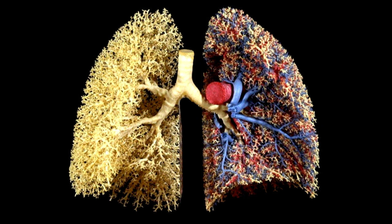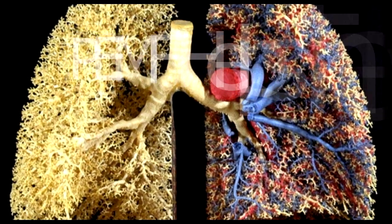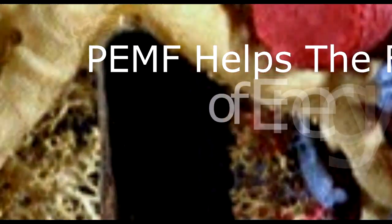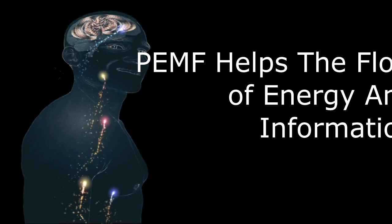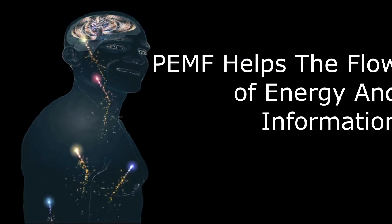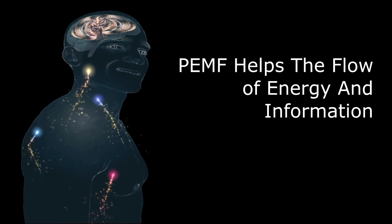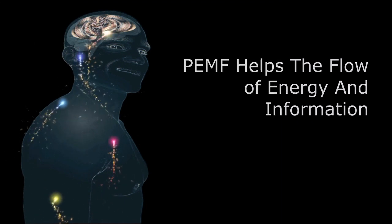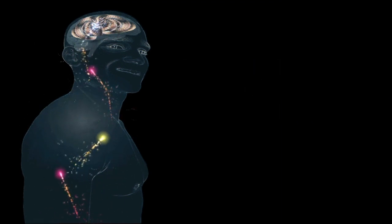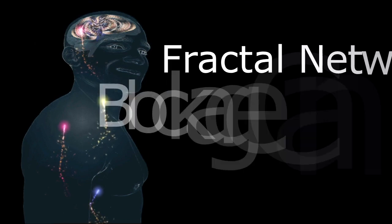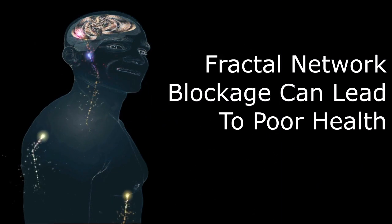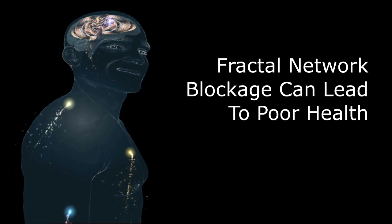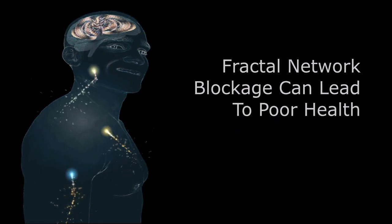But actually, PMF is working on all these different fractal branching networks. What this does is it helps the body and the flow of energy and information to take place between all your cells, between all your organs and your body to your cells, your cells to your body and the environment — and it happens at split-second speeds. If there's any blockages in these networks, ill health is a result.